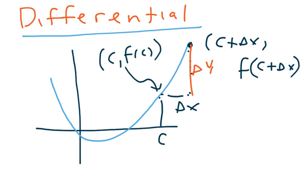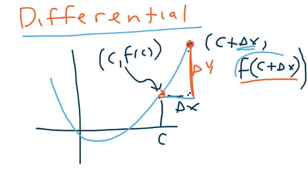That new y-value represents a delta y — we went up this much from our original y-value. Our change in y, delta y, is simply our new y-value minus our old y-value. Delta x is what we started with — we're just taking a small step in x, and when we plug in that small change in x, we get a new y-value. That's just the way functions work.